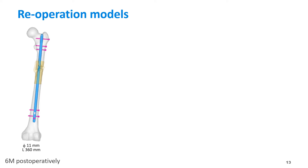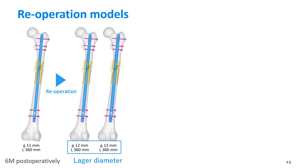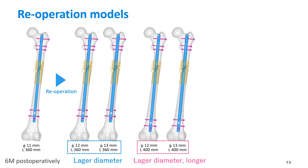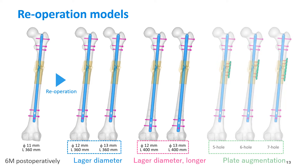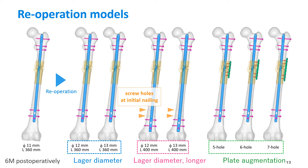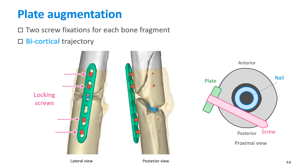The analysis models are: an actual intramedullary nailing model at 6 months post-operatively; exchange nailing models with a larger diameter nail, and with a larger diameter and longer nail; and models with plate augmentation on the lateral side. For exchange nailing models with a longer nail, the initial screw holes remain. In the plate augmentation models, two holes at both ends of the plate were fixed by locking screws.